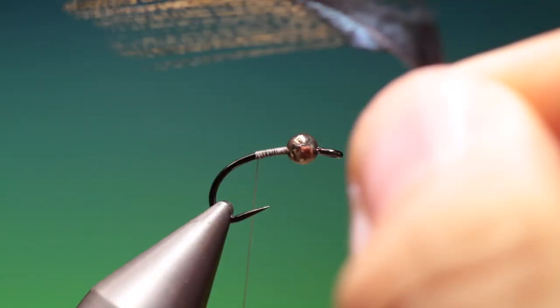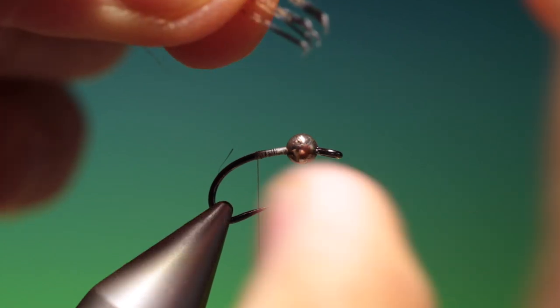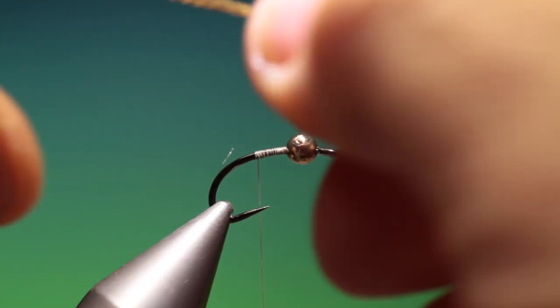So then we want some Coq de Leon and we just pull these out 90 degrees to the stem and pull them off. That'll level up the points.